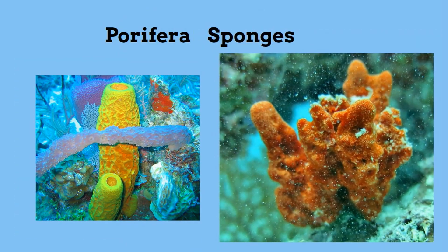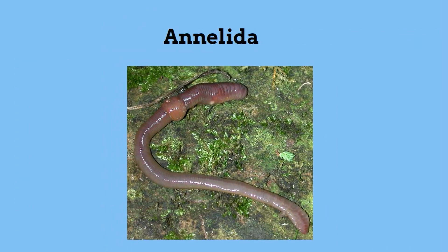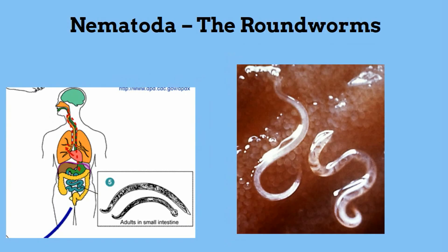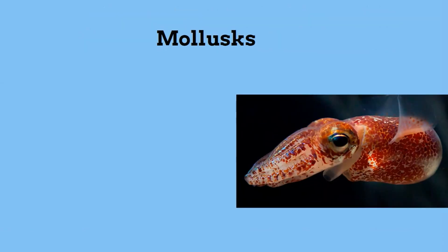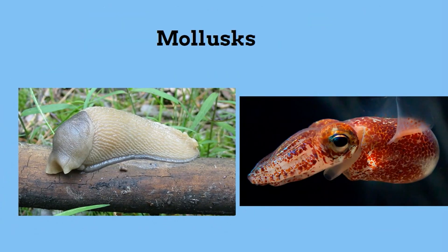Phylum Porifera, or sponges. Phylum Annelida, for the segmented worms, which include earthworms and leeches. Phylum Nematoda, for the roundworms, flatworms, and planarians. Next are the mollusks, which include snails, clams, and squid.